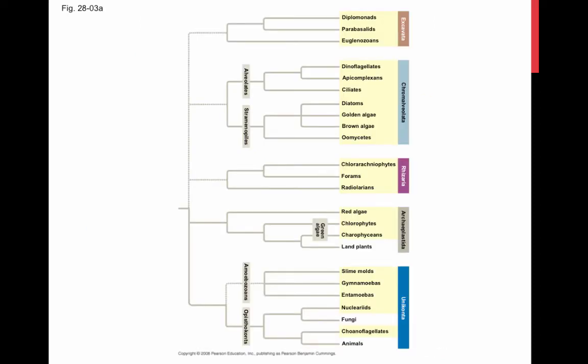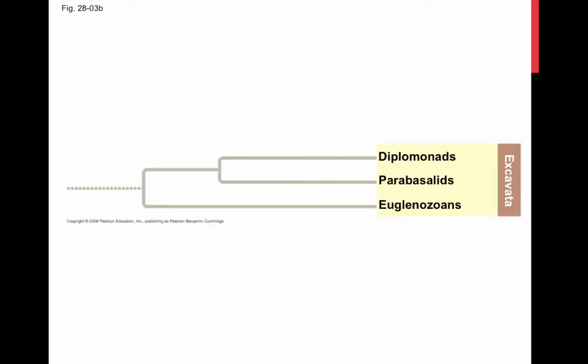One hypothesis divides all eukaryotes into five supergroups. We're going to look at the first group of protists, the excavates, which include protists that have modified mitochondria and protists with unique flagella. The clade Excavata is characterized by its cytoskeleton.